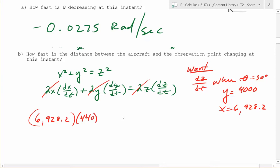It's getting bigger, so it's positive. Plus, well, what's y? Oh, 4,000 times. What's dy dt? How fast is the plane rising or falling? So how fast is it rising or falling? Zero, yep.